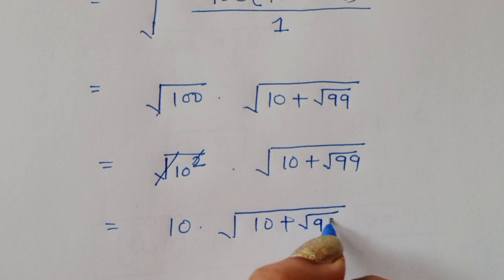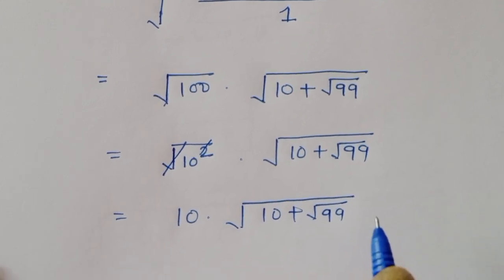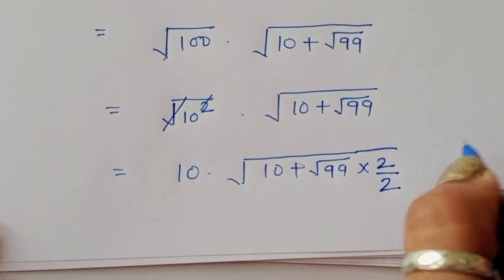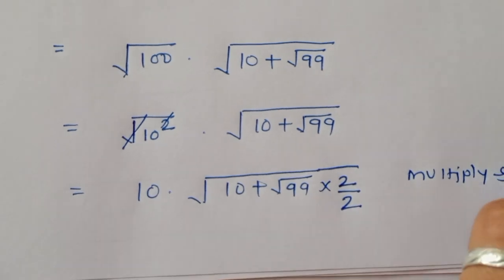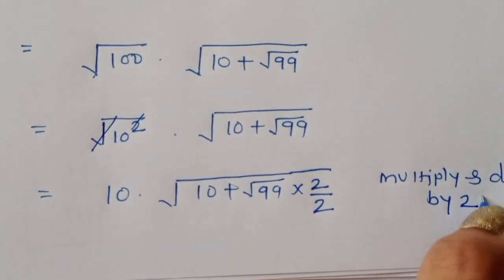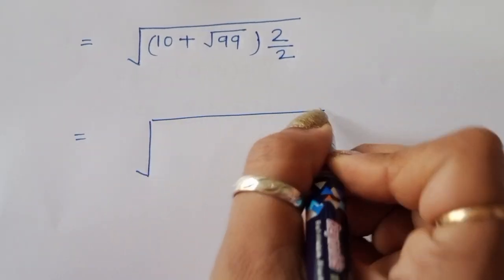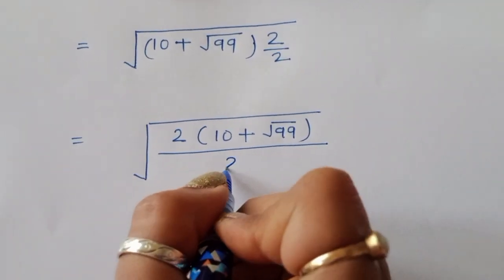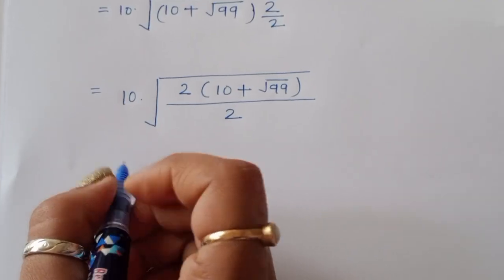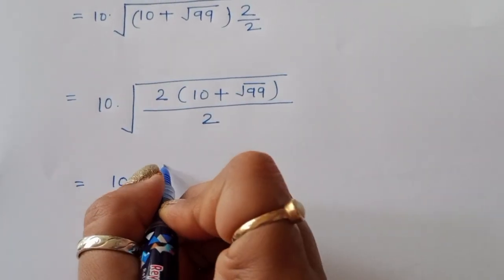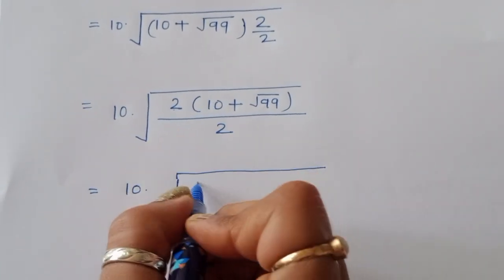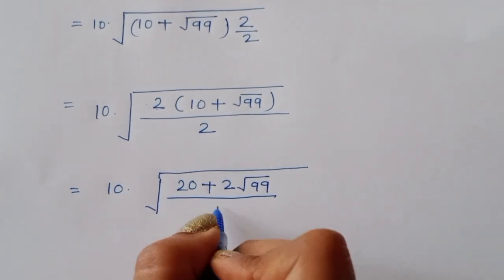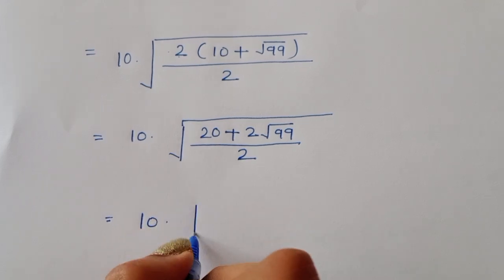Now we multiply and divide by 2 in numerator and denominator. So we get 10 times (10 plus √99) times 2, divided by 2. Expanding: 10 times (20 plus 2√99) divided by 2.